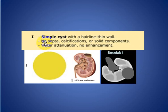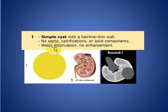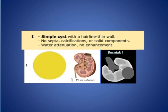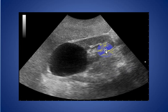Type 1: simple cysts. It has a hairline thin wall, no septa, no calcification, no solid component, water attenuation, and no enhancement. As we see here, homogeneous water density cyst, thin wall, no enhancement, and no calcification.